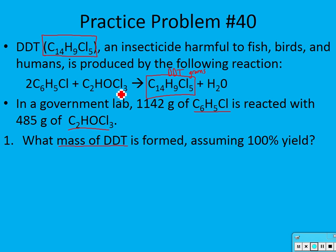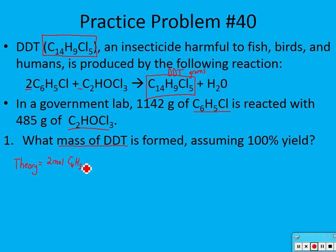Just like in the last video on limiting reactants, in order to figure out the mass of DDT that's going to be formed, we need to know which one of these reactants is going to run out first — the limiting reactant. I always start by writing the theoretical mole ratio. We have 2 moles of C₆H₅Cl and 1 mole of C₂HOCl₃, so I put the one with more moles on top: 2 moles over 1 mole gives a theoretical mole ratio of 2.